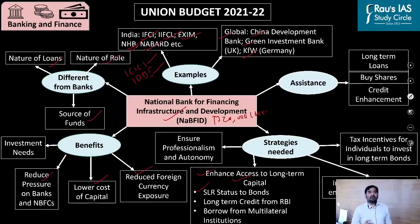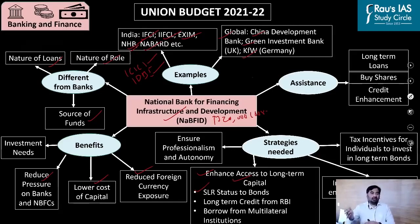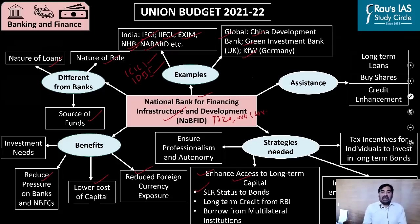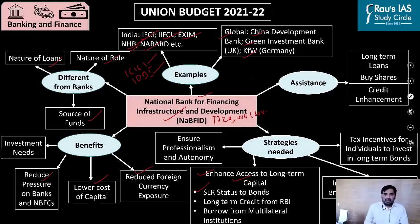The Statutory Liquidity Ratio, or SLR, means banks are required to keep aside a certain percentage of depositors' money in cash, gold, and government securities. What is being suggested is that when the development bank issues bonds, those bonds should be treated as eligible securities under SLR. This way, banks will invest in the bonds issued by the development bank, enabling mobilization of depositors' money for financing infrastructure projects.